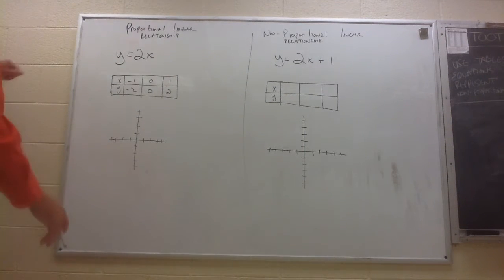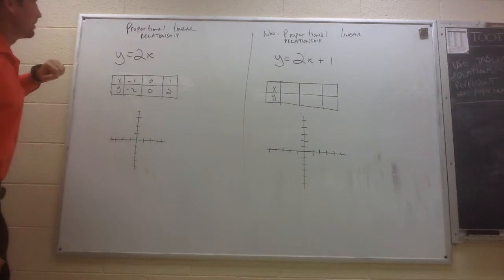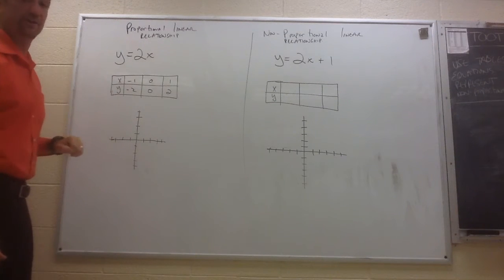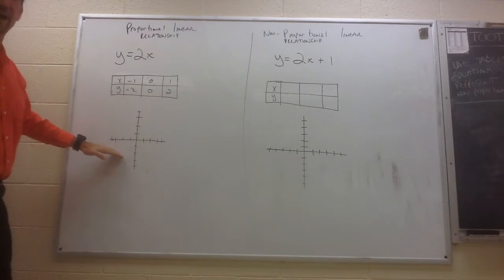In chapter 3 we were talking about proportional linear relationships. Remember we said that proportional linear relationships could be represented by an equation, by a table, or by a graph.